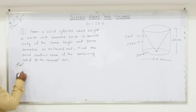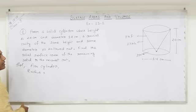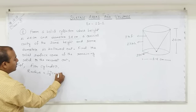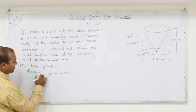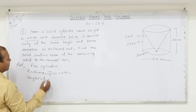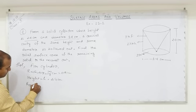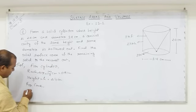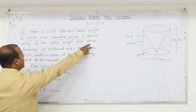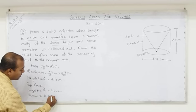We note all the details. For the cylinder: diameter = 1.4 cm, so radius = 1.4/2 = 0.7 cm. Height of the cylinder = 2.4 cm. For the cone: the problem states same height and same diameter, so height = 2.4 cm and radius = 0.7 cm.